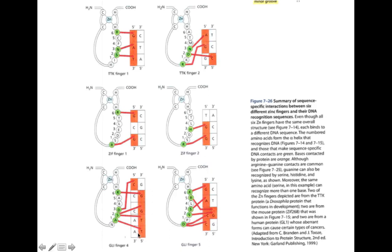There is evidence that some base pairs can also be skipped without any interaction with the protein. The protein can have an amino acid interact with one nitrogenous base, skip the next, and then interact with another. This entirely depends on the sequence of amino acids in the alpha helix and the nitrogenous bases in the DNA region the protein is interacting with.